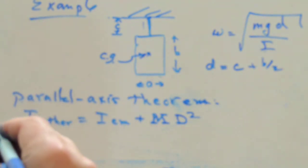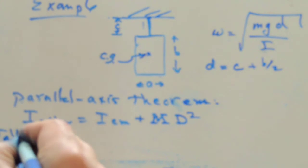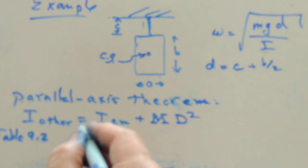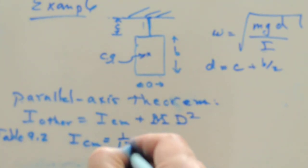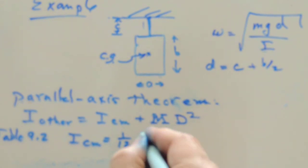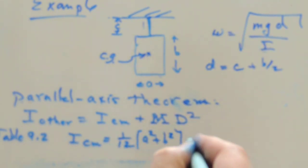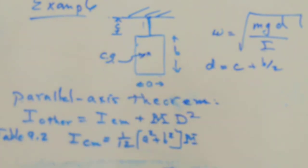And the text table 9.2, which I hope is becoming one of your favorite tables, we are told there that the moment of inertia of a rectangle like this through the center of mass is 1/12, 1/12 of a squared plus b squared times the total mass of the object.